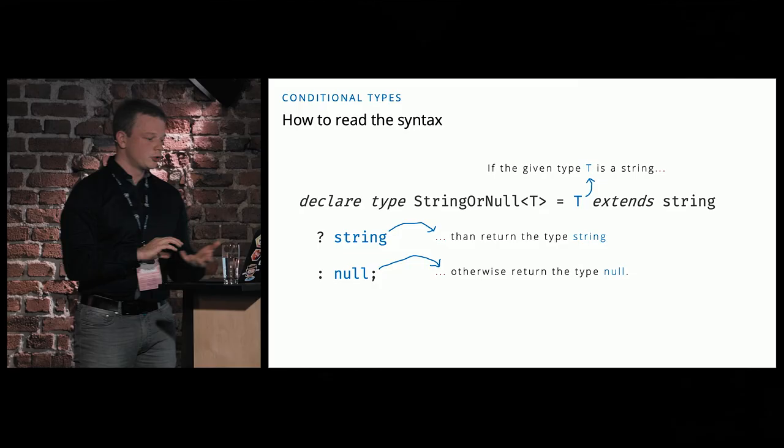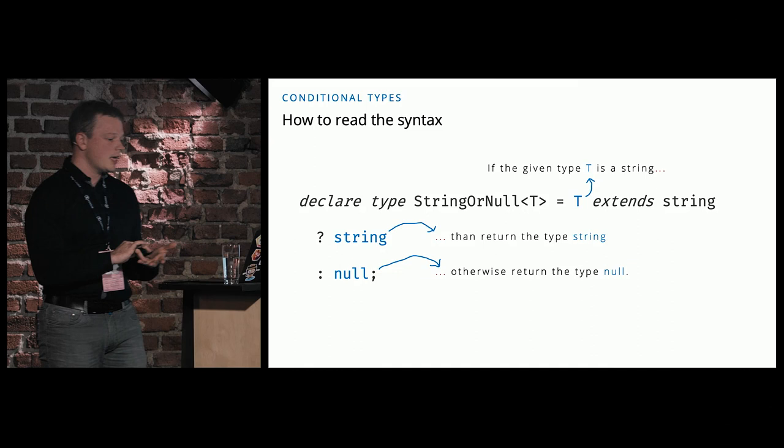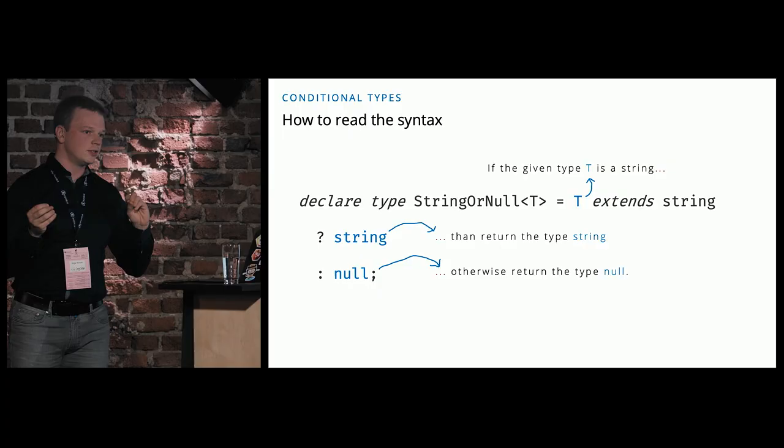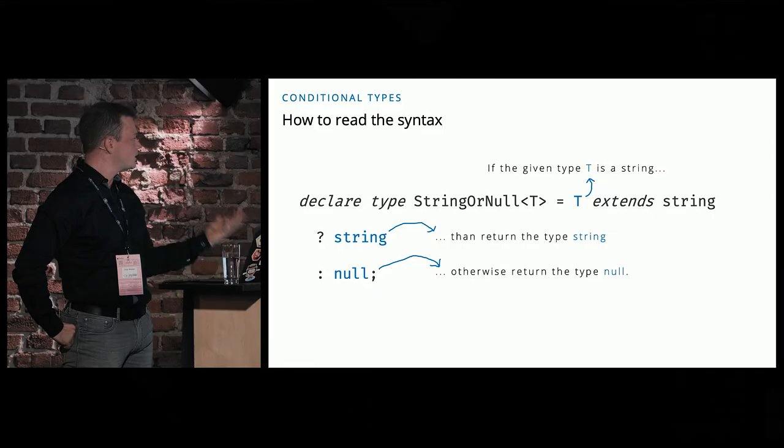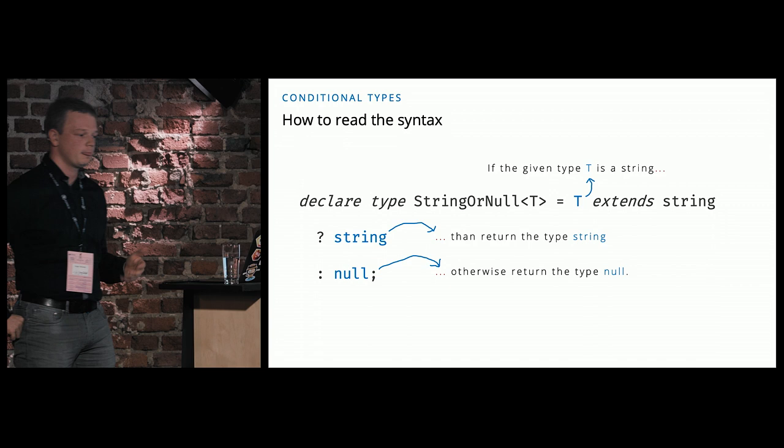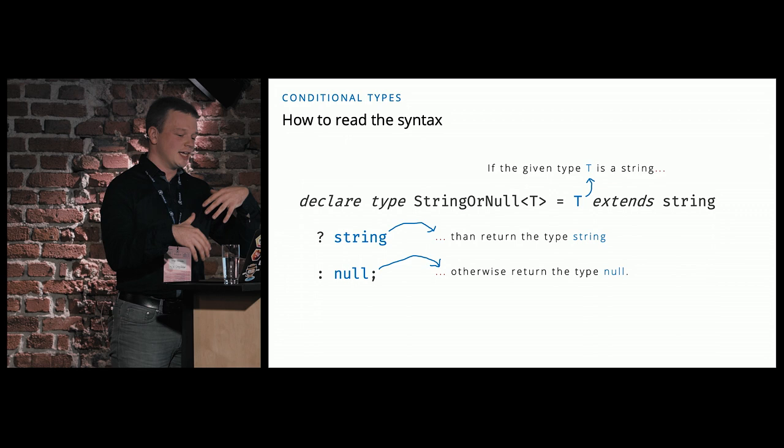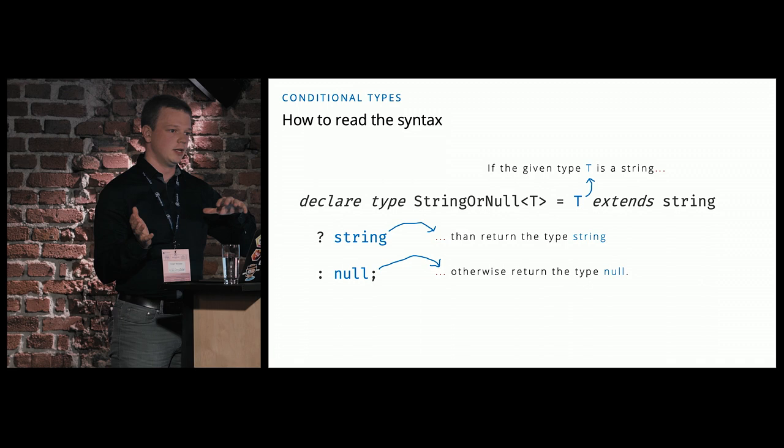Short recap: a conditional type is nothing else than a ternary expression. The first time I read such a conditional type, I had some trouble with how I should read it. So it reads: if the given type is a string, then return the type string; otherwise, return the type null. This opens up a world where you can nearly transform everything based on your objects into a whole new API that is hopefully better to use and better understood by your colleagues.